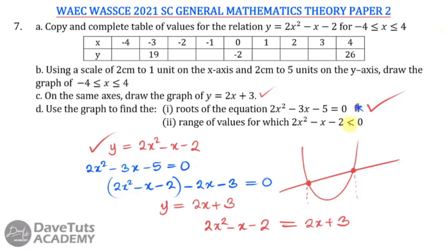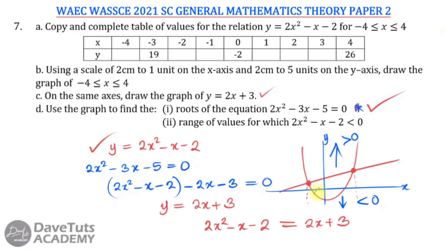For the range of values for which 2x² - x - 2 < 0: on the positive side of the y-axis, y is greater than zero; on the negative side, y is less than zero. The region of interest is where the quadratic dips below the x-axis. The range of x values for that region corresponds to the roots where the graph crosses the x-axis and moves to the negative side.